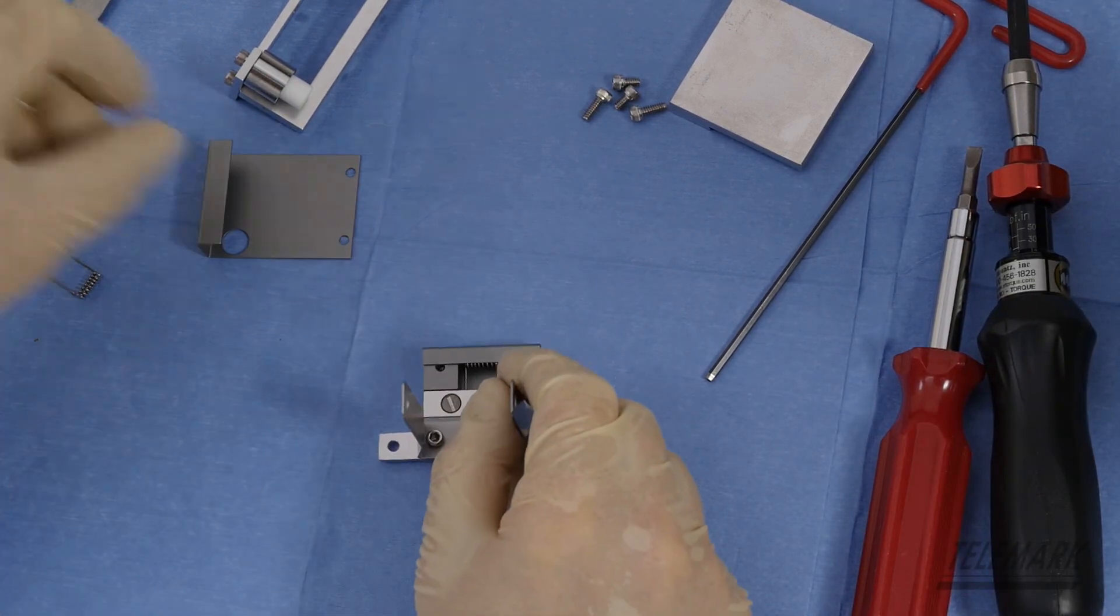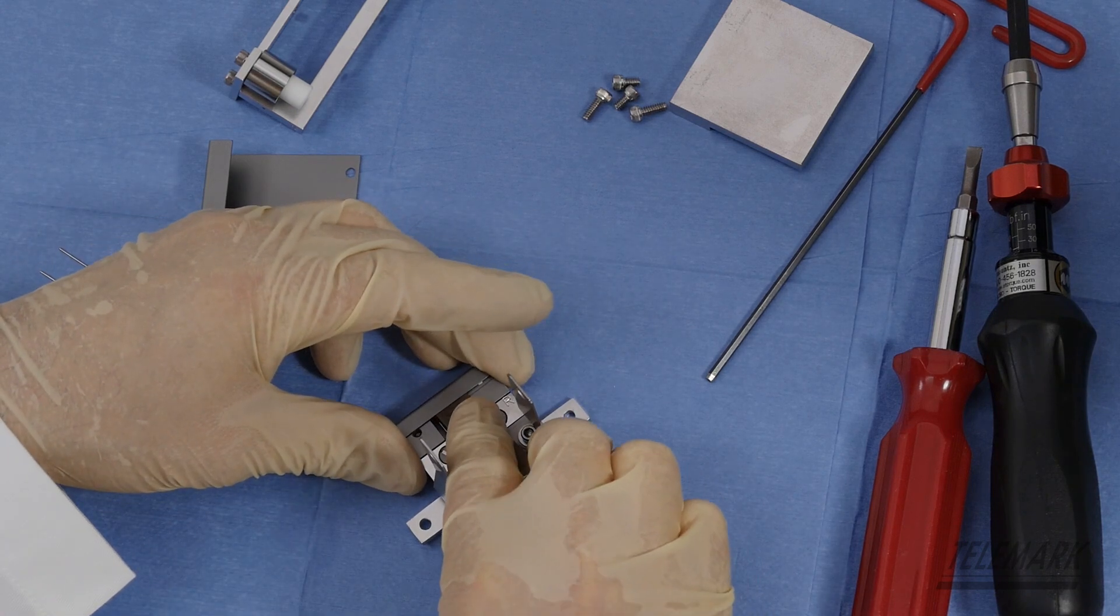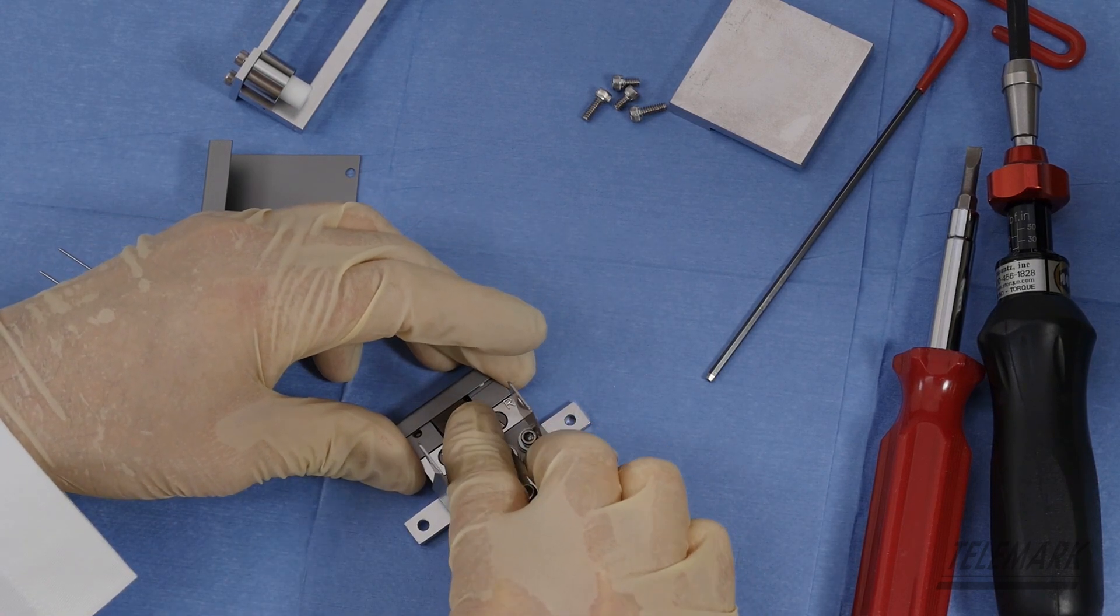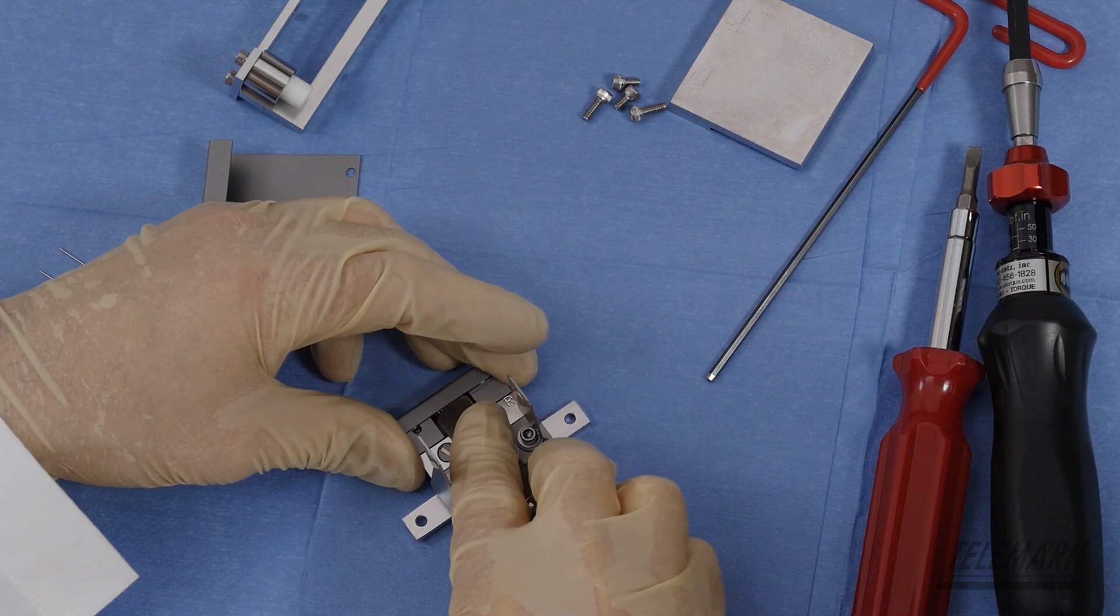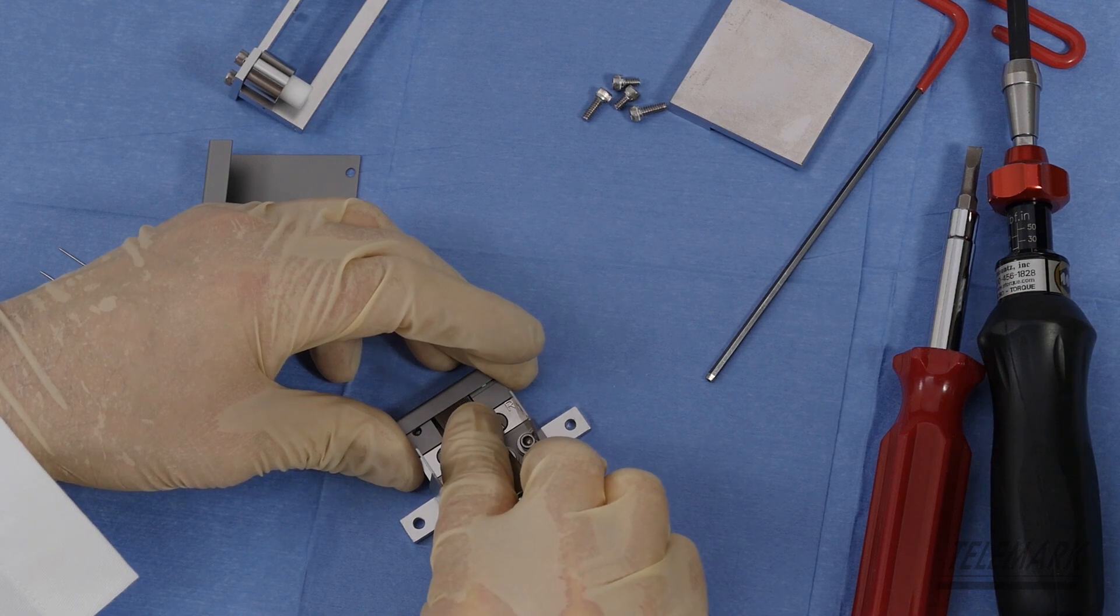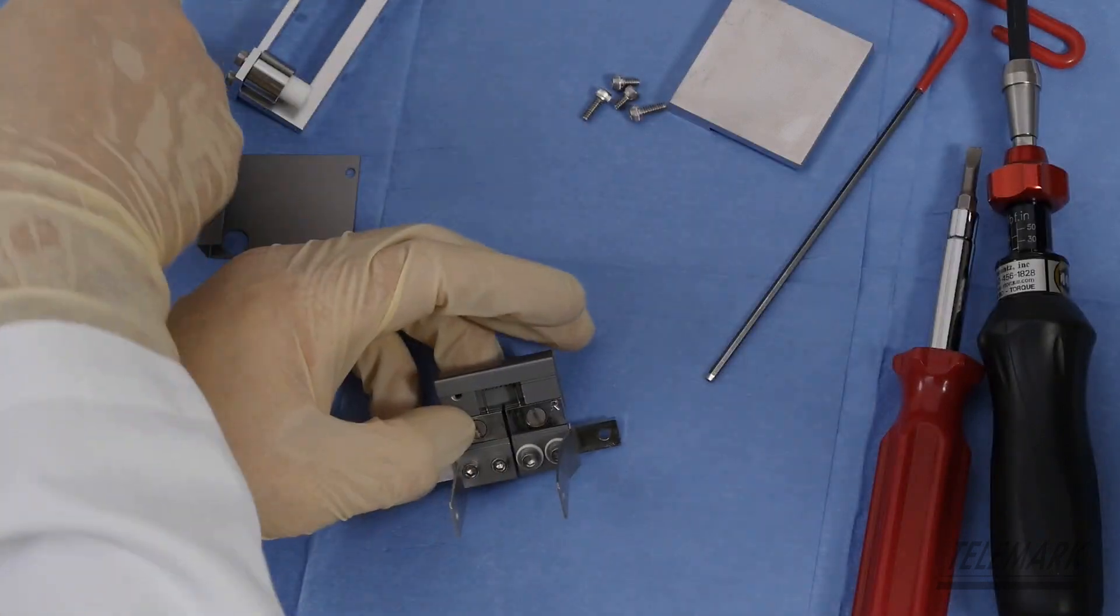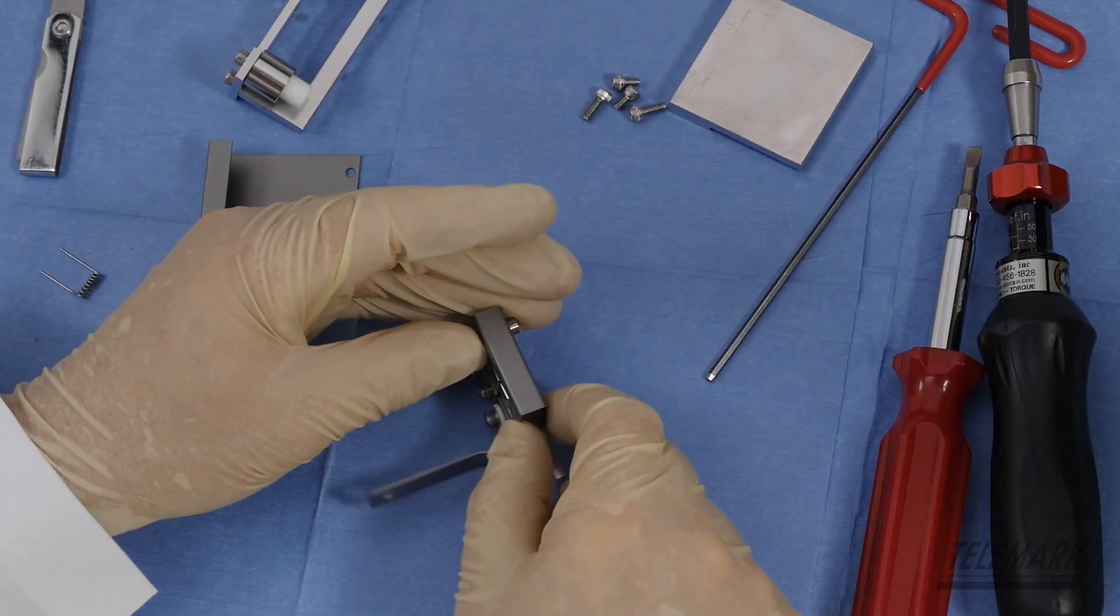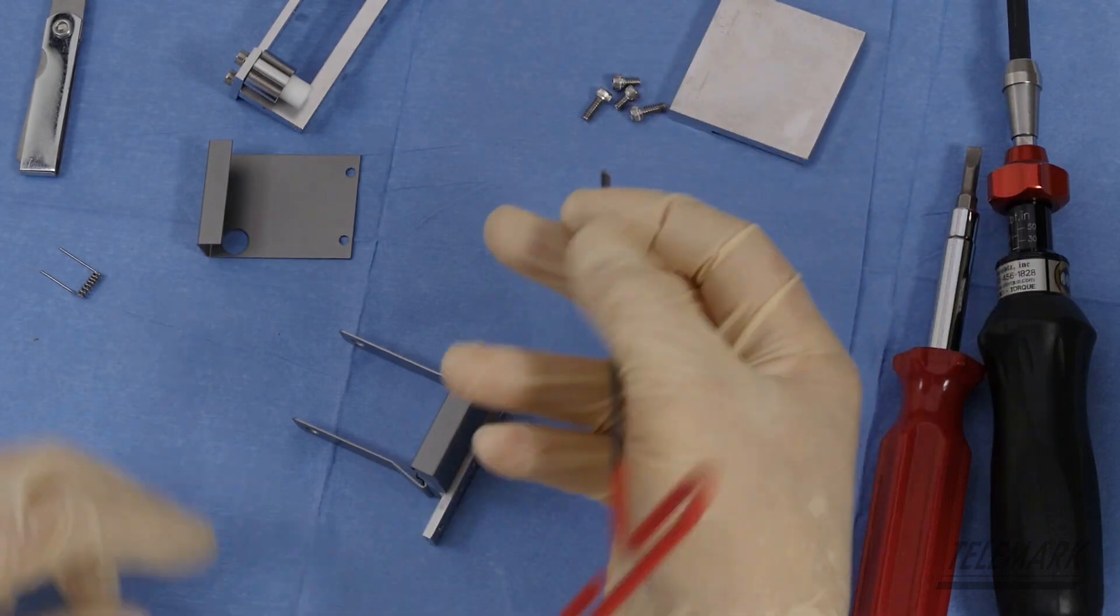And then you got to check the gap between the filament and the beam former. The gap should be 25 to 30 thousandths. So I'm set at 30. Even if it flexes back, it should be within 25 thousandths. Grab your Allen wrench again.